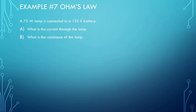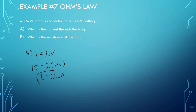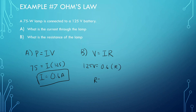Last question for this part. A 75-watt lamp is connected to a 125-volt battery. What is the current through the lamp? Power equals IV: power is 75 watts, voltage is 125. So current is 75 divided by 125, which gives 0.6 amps. Part B: what is the resistance of the lamp? Now that we know the voltage is 125 and the current is 0.6, we can find resistance: 125 divided by 0.6 gives us 208.3 ohms.